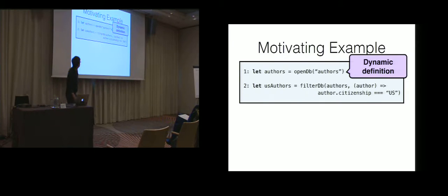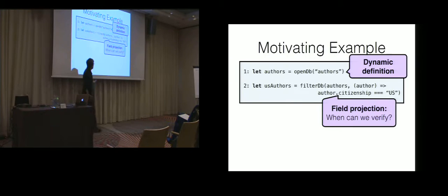The point is that what actual fields are associated with each author is something that we don't know until we open this file. This file is going to dynamically define what these fields are. But we still want to do things like use them, like project out of them, and know that they're going to work, that they're going to be there. So there's a tension.